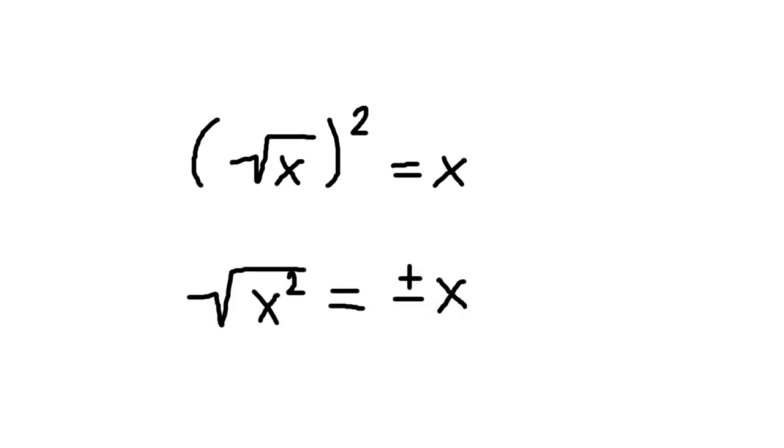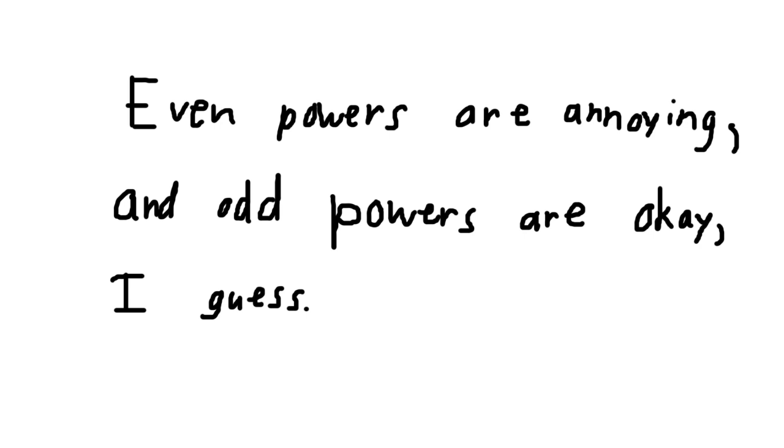This is an example where the candidate for the square function, the square root function, is actually not a function at all, and so it can't be the inverse function. Coincidentally enough, this doesn't work for any even power and it works properly for any odd power.